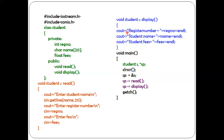Inside the display member function, cout prints the register number label and displays its stored value. Because of endl the cursor moves to the next line, then the student name is printed, and again because of endl the cursor moves down. Next, the fees label is printed followed by the value stored in the fees variable, with endl moving the cursor to the next line. The closing brace indicates the end of the display member function.